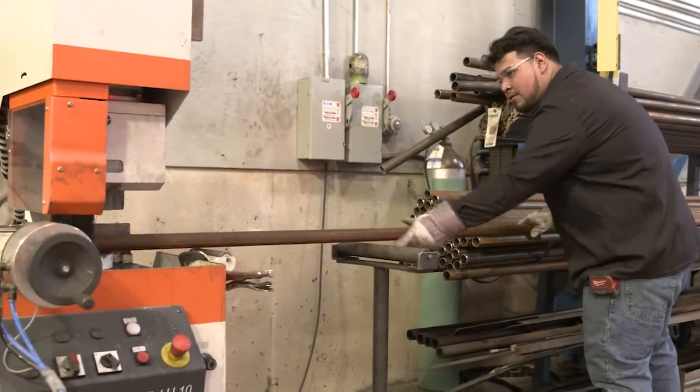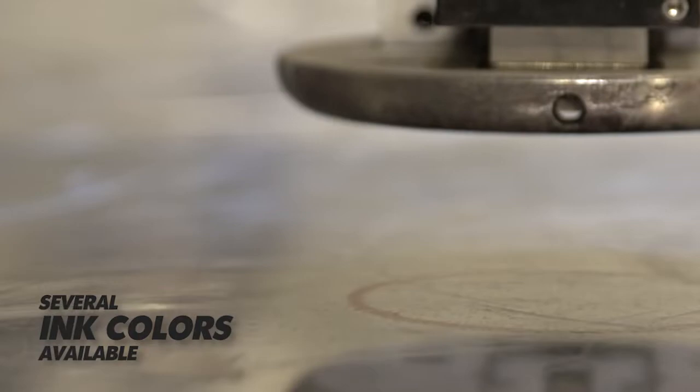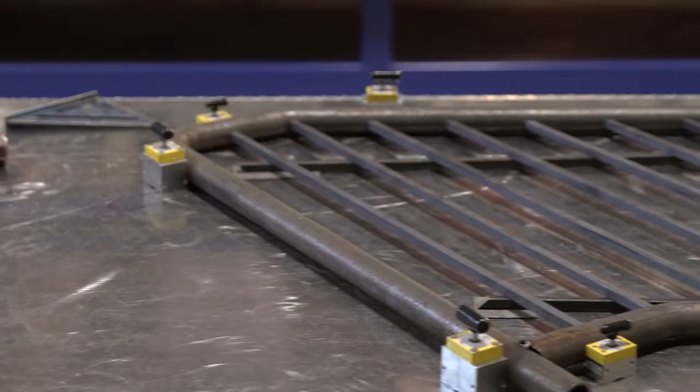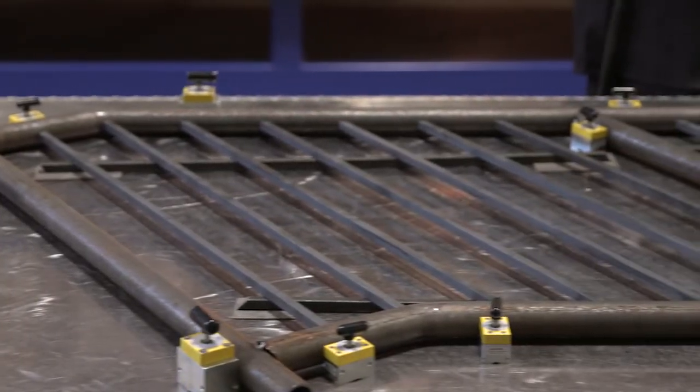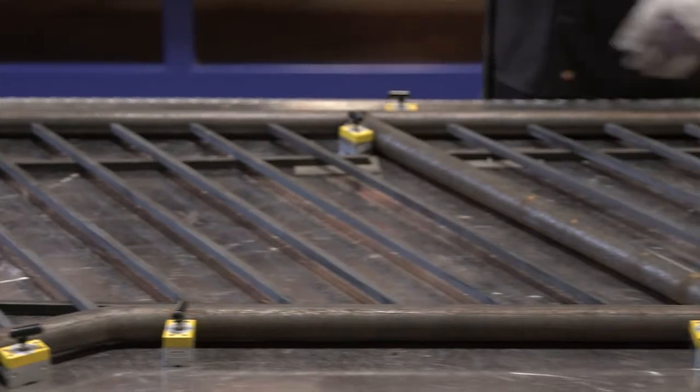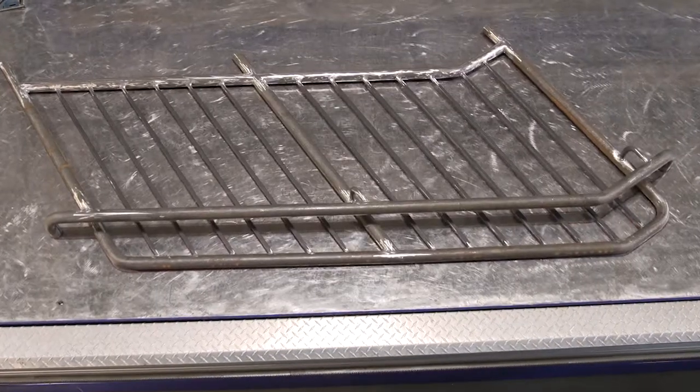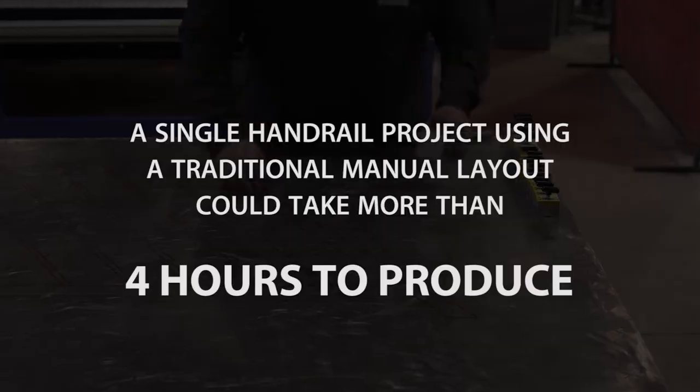Manual layouts can lead to mistakes, but with the Lightning Rail, layouts are made with the highest level of accuracy, virtually assuring the correct layout every time.